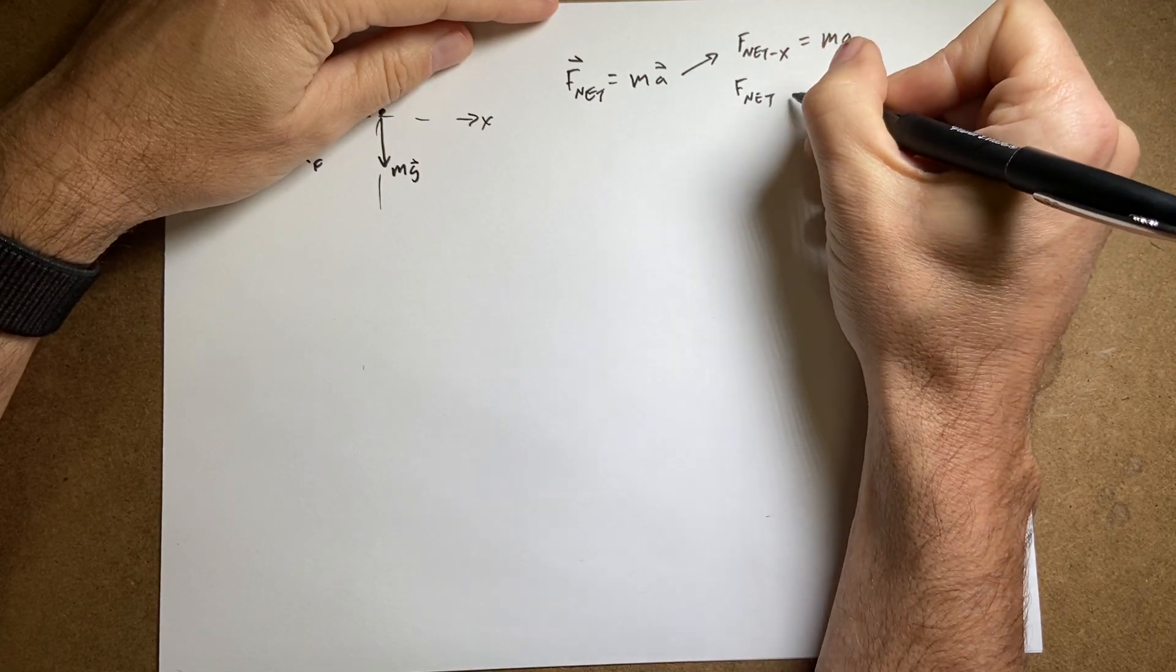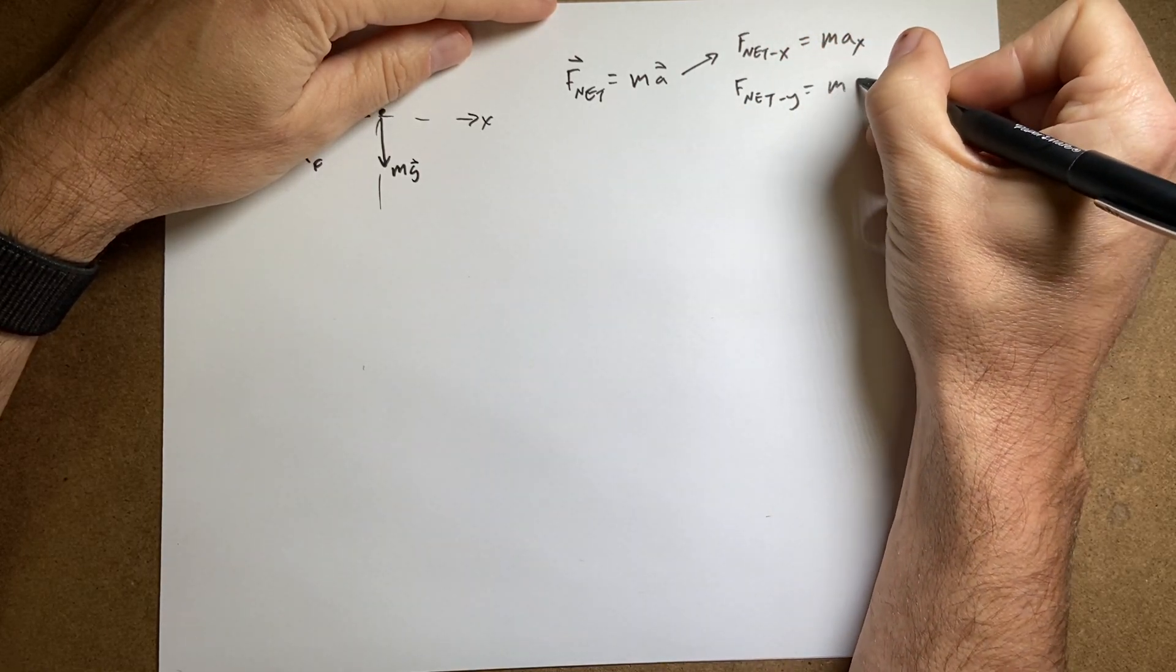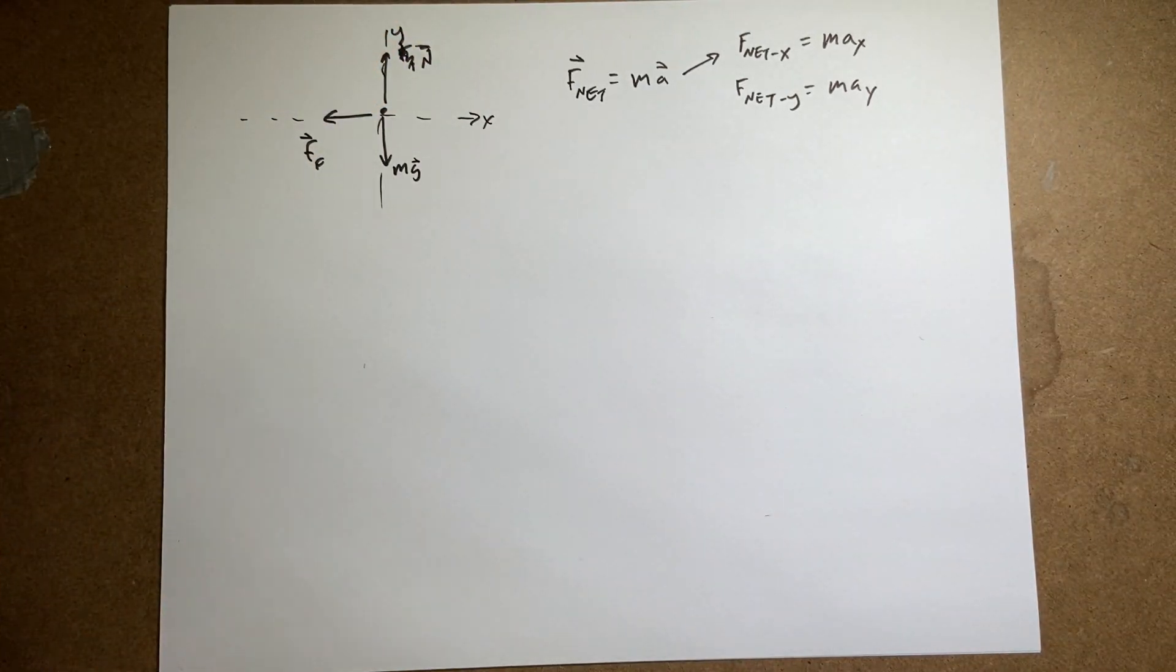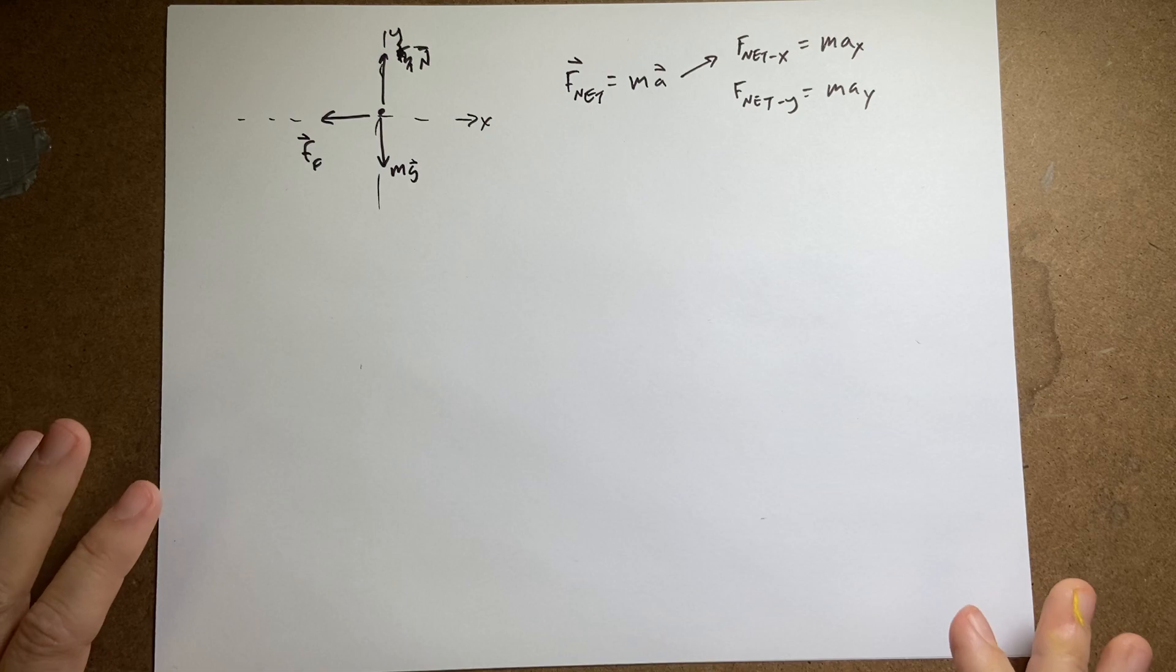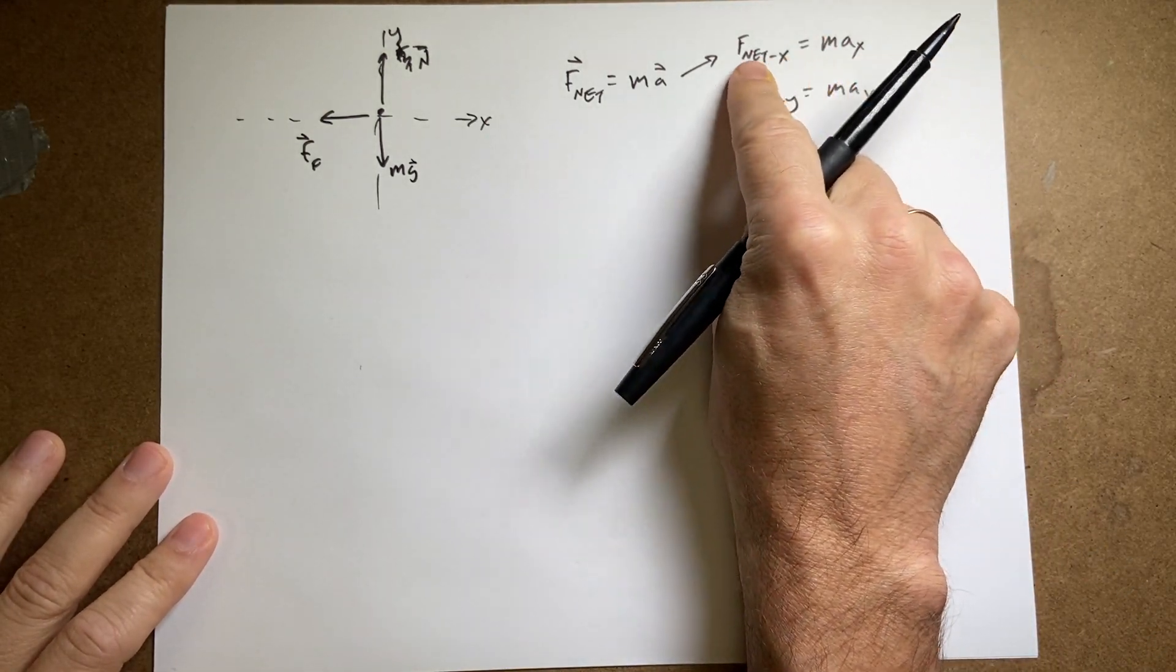So I could say f net in the x direction equals mass times acceleration in the x direction. f net in the y direction equals mass times acceleration in the y direction. I can break that up into two scalar equations to make it easier to deal with. So let's deal with this one first.